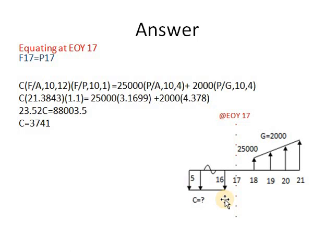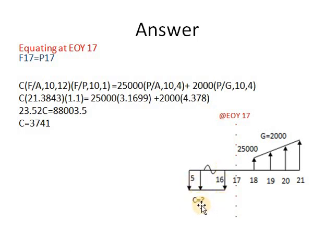The future of this annuity is F equals A into F/A at 10%, N=12. But since I am equating at year 17, the future of the annuity at year 16 must be shifted one period forward, so I multiply it by F/P at 10%, N=1.